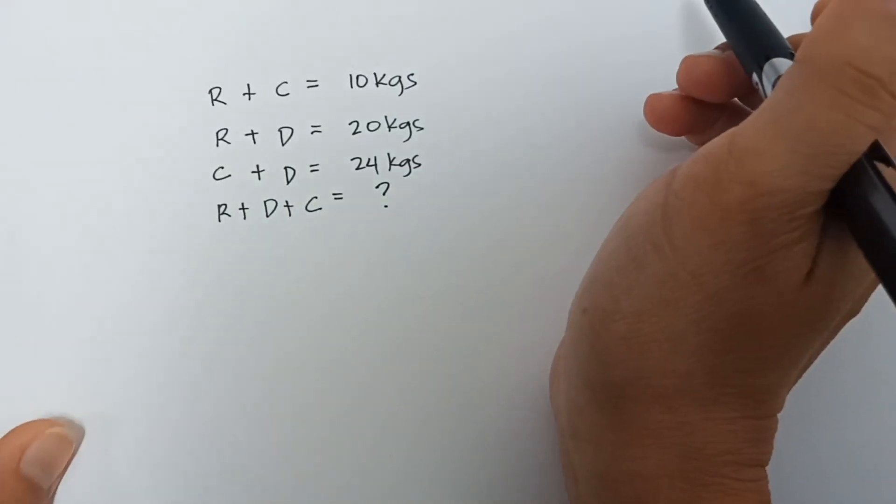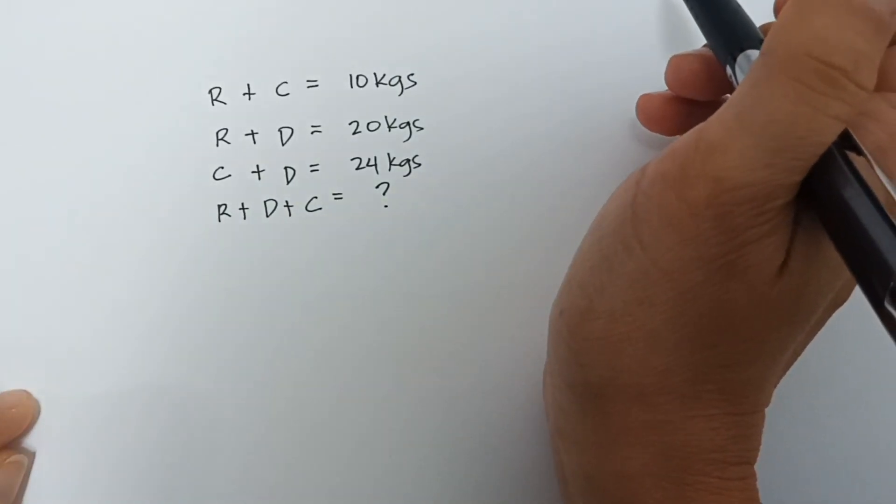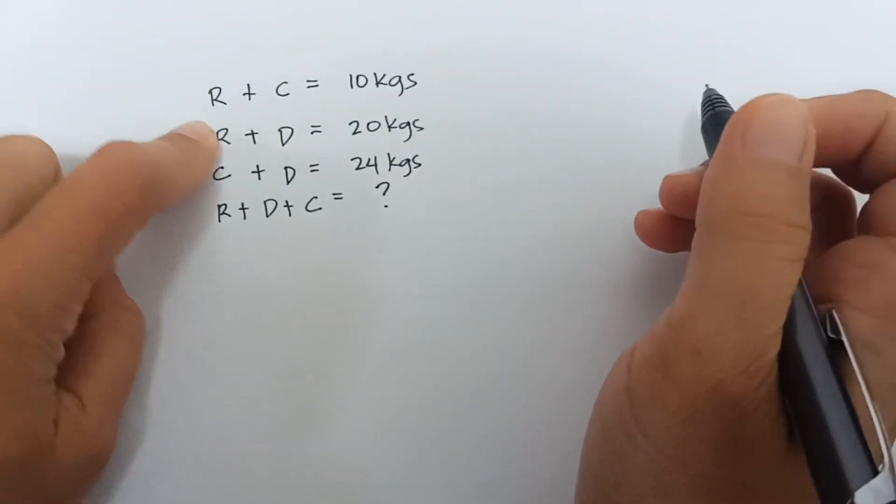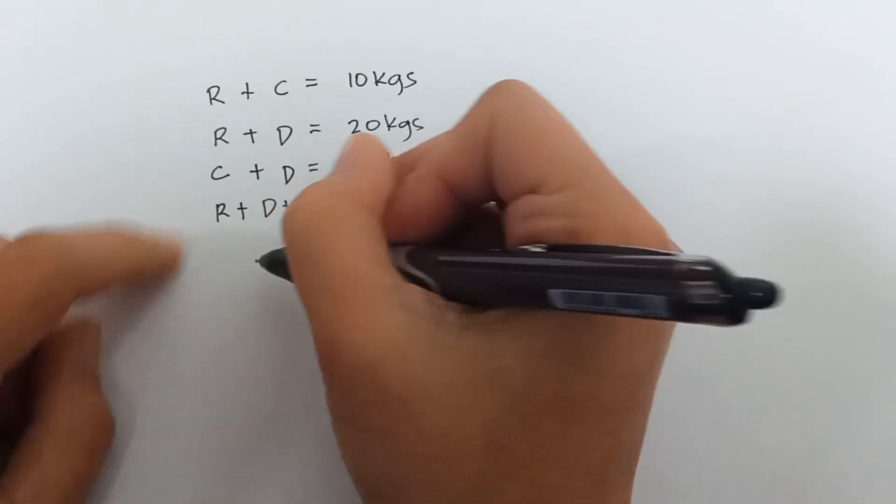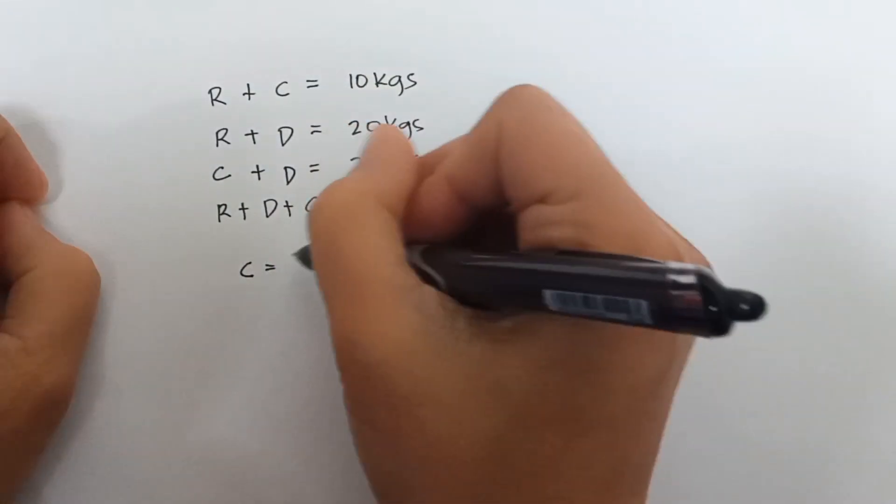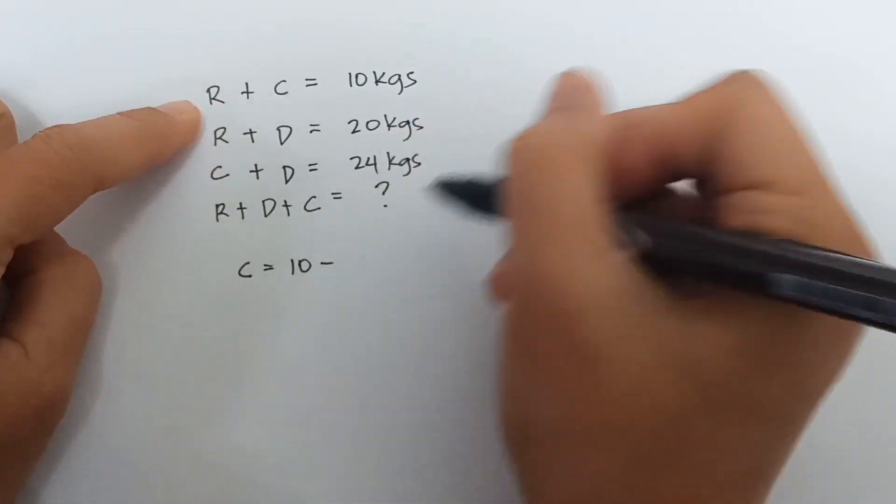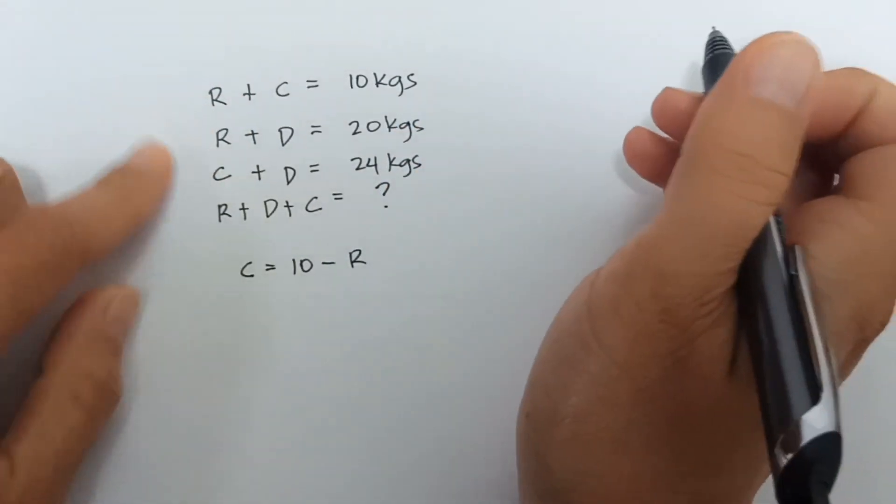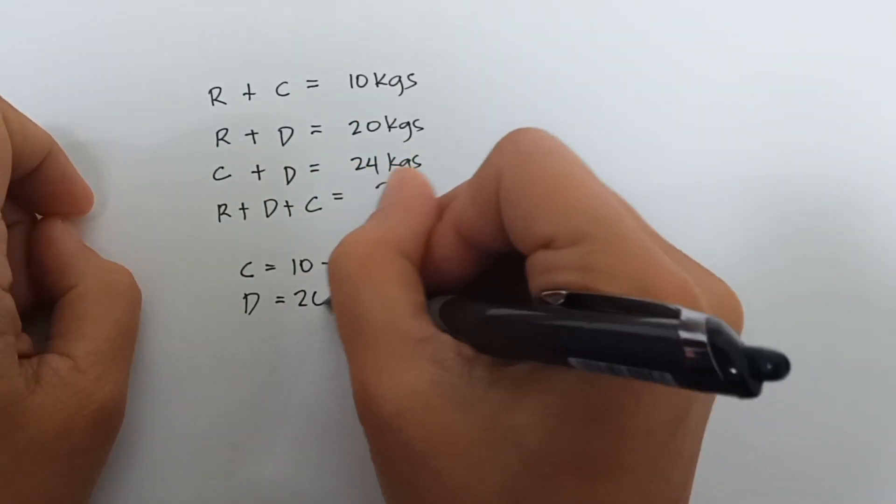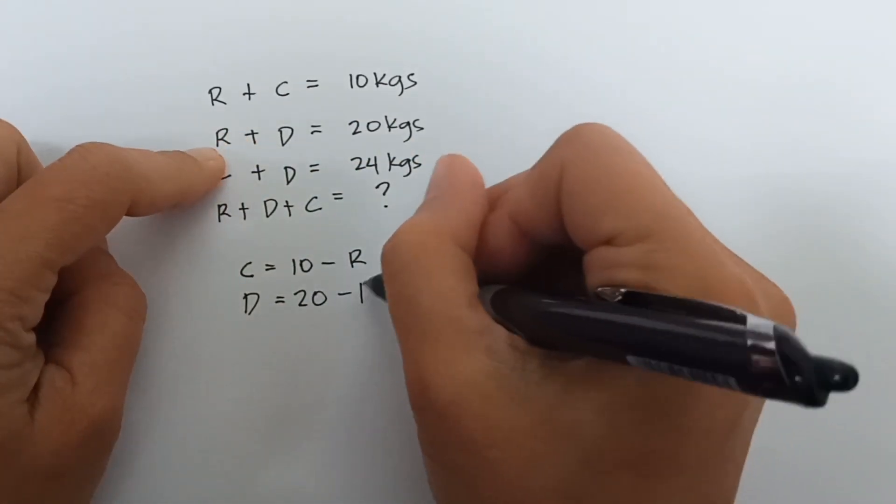So guys, let's find the value of rabbit first. To find the value of rabbit, cat equals 10 kilograms minus R. Then, dog equals 20 minus R.